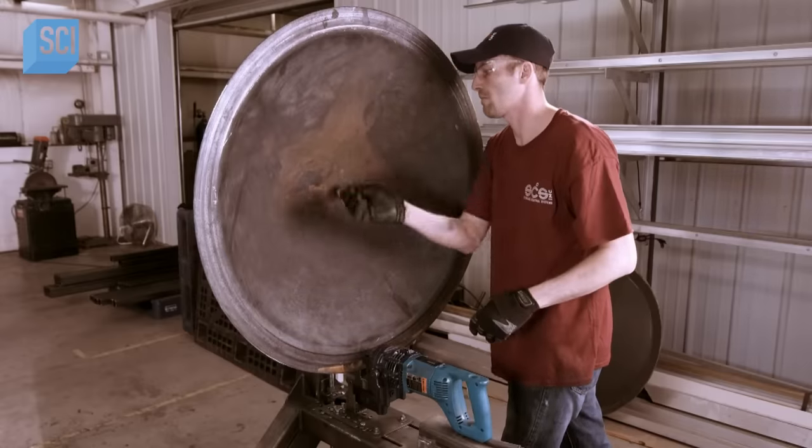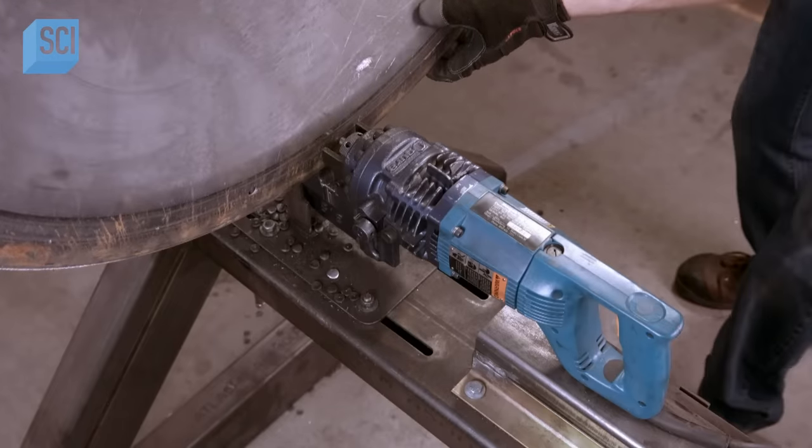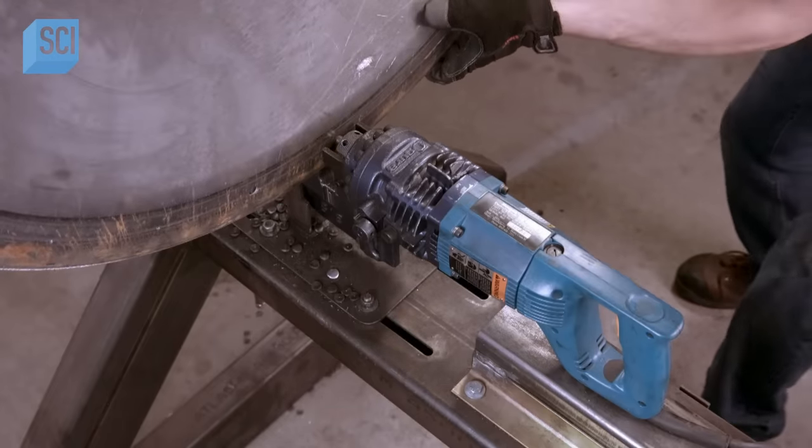They mount the lid on a fixture and, following those marks, use an automated steel punch to perforate the steel.